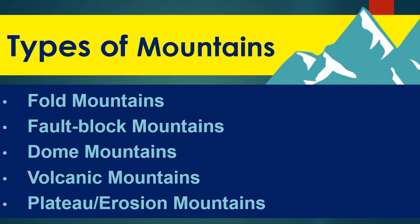Now we have the types of mountains. They are categorized according to how they are formed and how they look. The first type is fold mountains. The second is fault block mountains. The third is dome mountains. The fourth is volcanic mountains. And the fifth is plateau or erosion mountains. We will discuss each one.